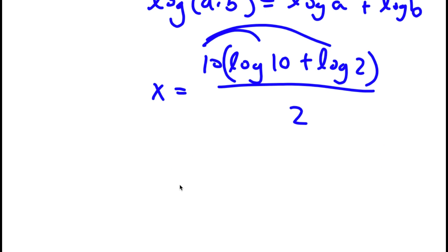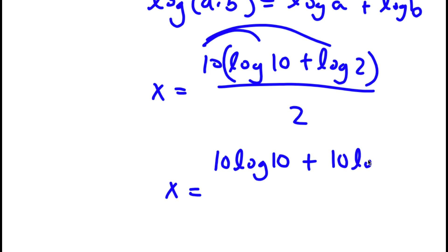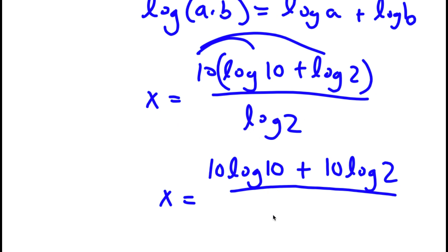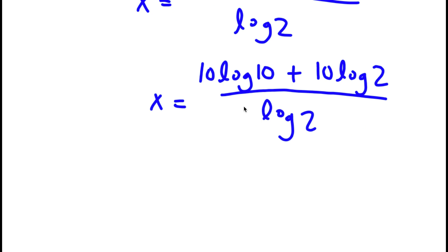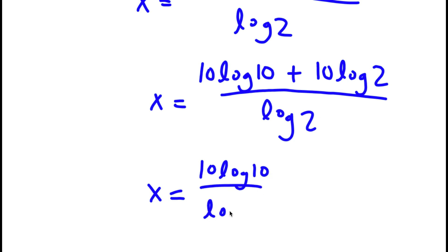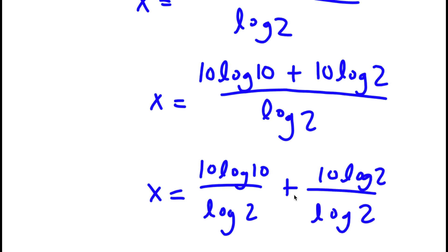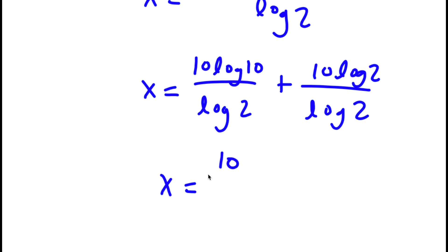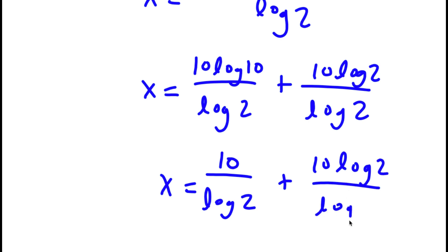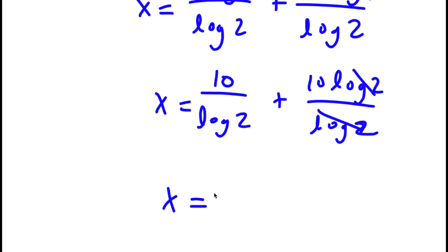Now, if I distribute the 10, I get 10 times log 10 plus 10 times log 2, all over log 2. And now this is the same thing as 10 times log 10 over log 2 plus 10 times log 2 over log 2. Now, log 10 is actually equal to 1, so now I have x is equal to 10 over log 2 plus 10 times log 2 over log 2. These two log 2s cancel out, so now I'm left with x is equal to 10 over log 2 plus 10.